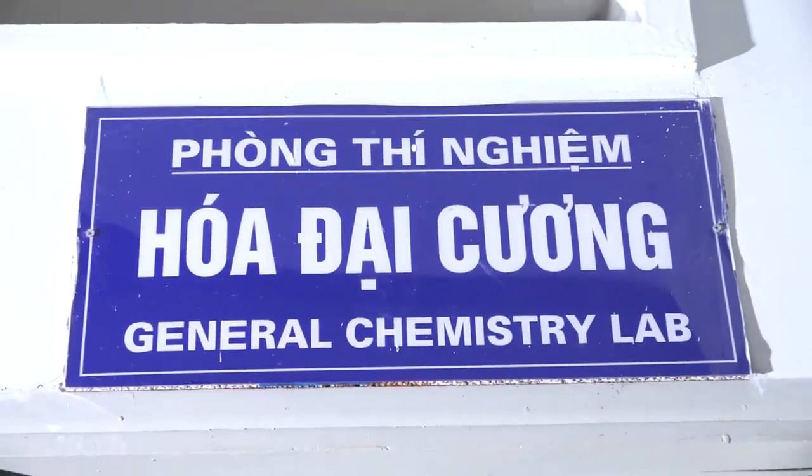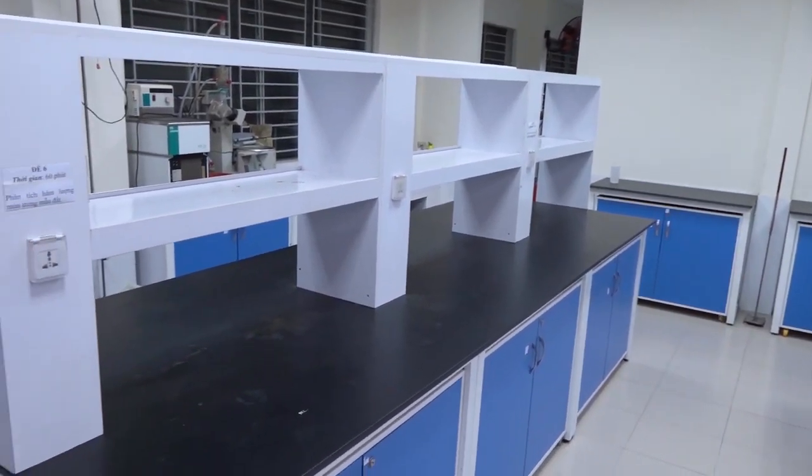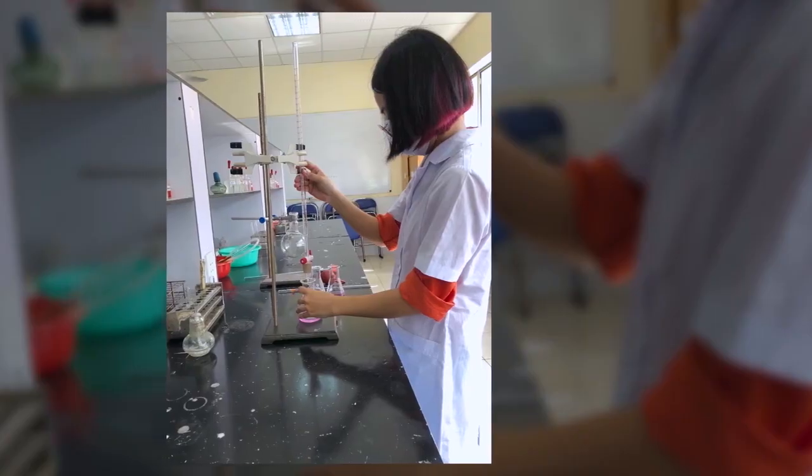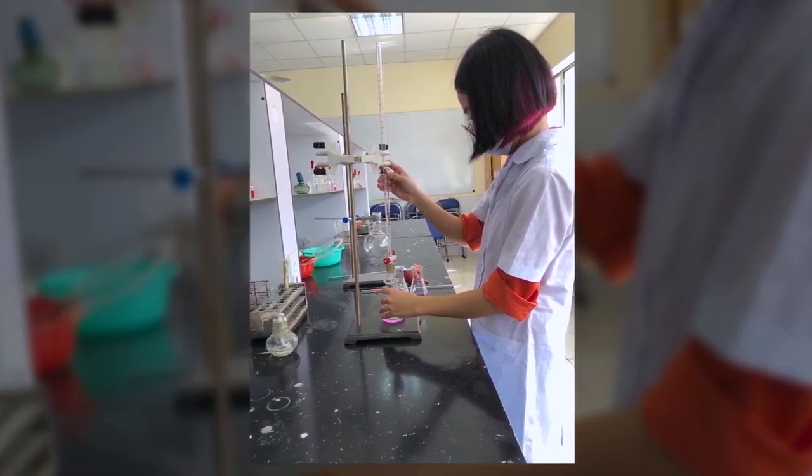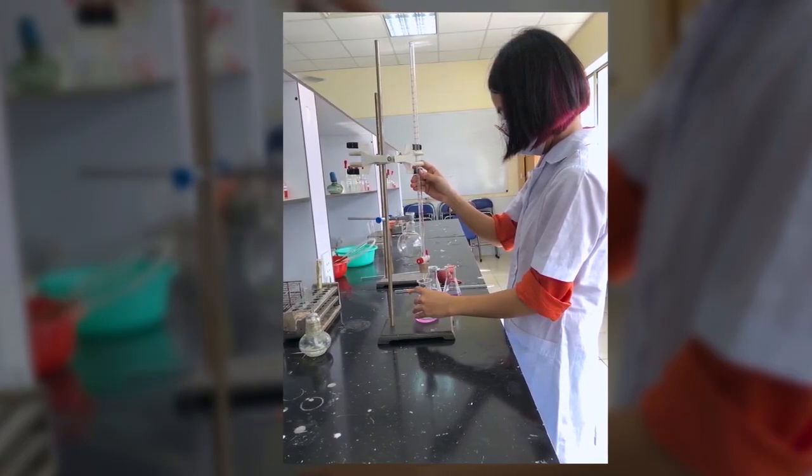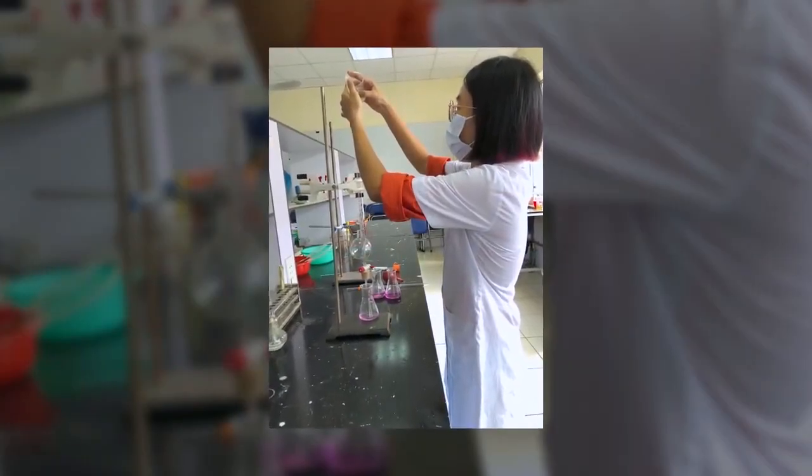The General Chemistry Laboratory is used for the general chemistry experiment course. This course supplies basic knowledge of laboratory techniques and laboratory skills such as the determination of molecular mass of oxygen, water crystallization, and melting point of substances.